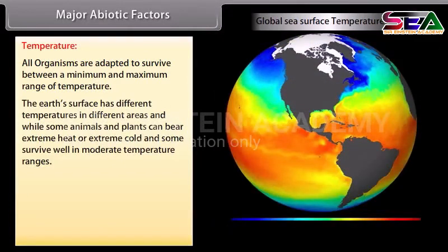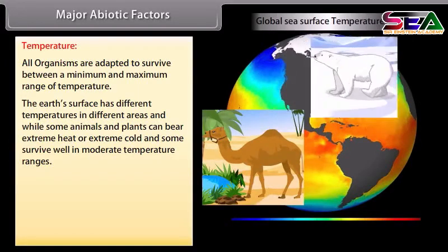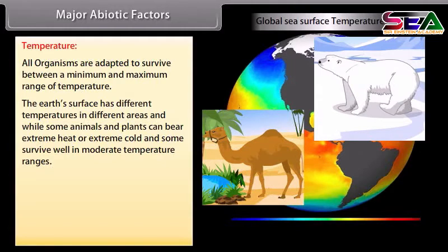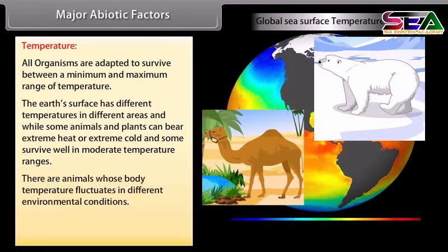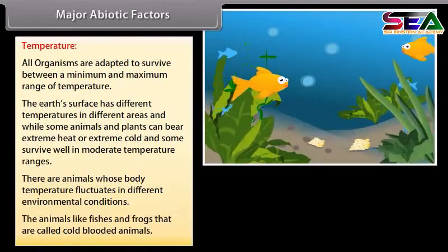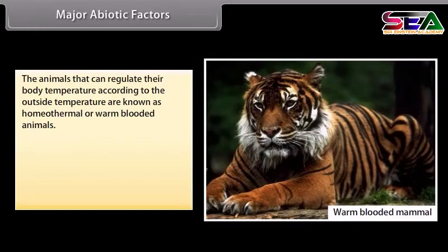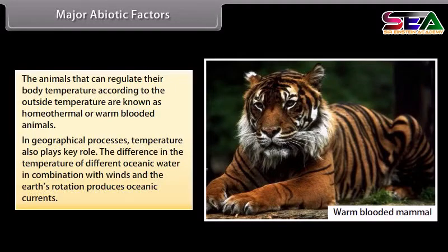The earth's surface has different temperatures in different areas, while some animals and plants can bear extreme heat or extreme cold, and some survive well in moderate temperature ranges. Animals whose body temperature fluctuates with environmental conditions, like fishes and frogs, are cold-blooded. Animals that can regulate their body temperature according to outside temperature are known as homeothermal or warm-blooded animals. Temperature also plays a key role in geographical processes — differences in oceanic water temperatures combined with winds and the earth's rotation produce oceanic currents.